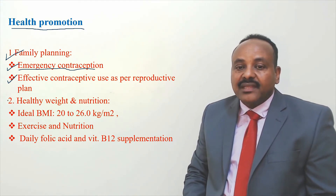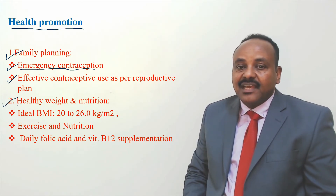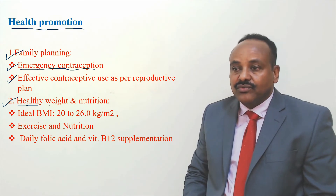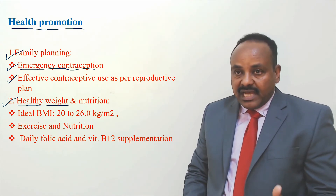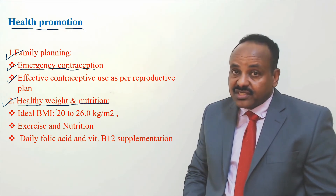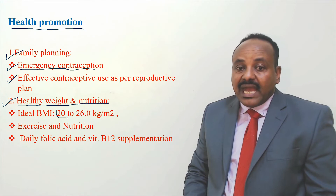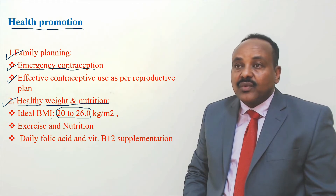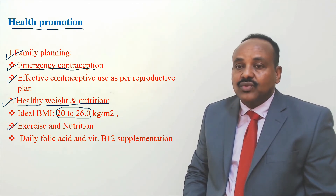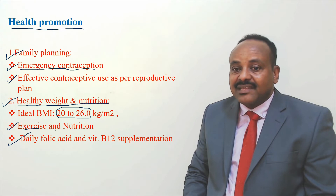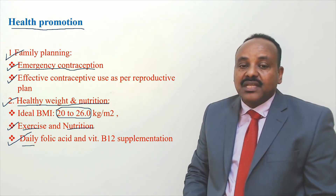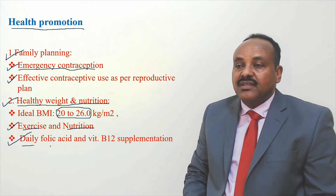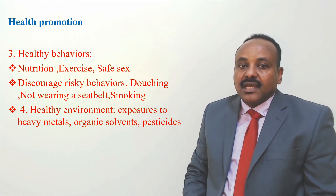We need the woman to be at a healthy weight and have good nutrition. If she is obese, she should improve her weight to within normal limits. Advise her to talk to a nutritionist, as the ideal BMI is 20 to 26 kg per meter squared. Encourage exercise and a healthy diet. For women who are planning to get pregnant, we supply daily folic acid and vitamin B12 before pregnancy to promote her health.